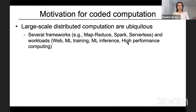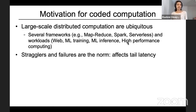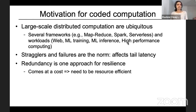Distributed computation today is ubiquitous with several frameworks supporting it and also a variety of workloads making use of such frameworks. It's also well known that stragglers and failures are the norm in these distributed computation setups and they affect tail latency, which is a critical metric in these systems. Redundancy, that is, adding redundancy to computation, is one approach for adding resilience.